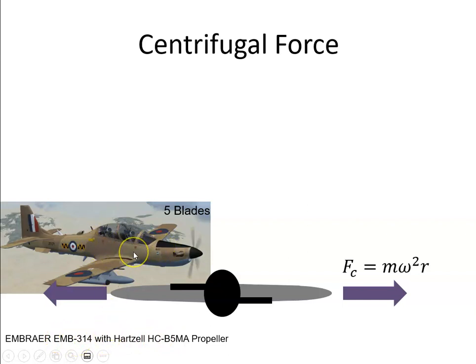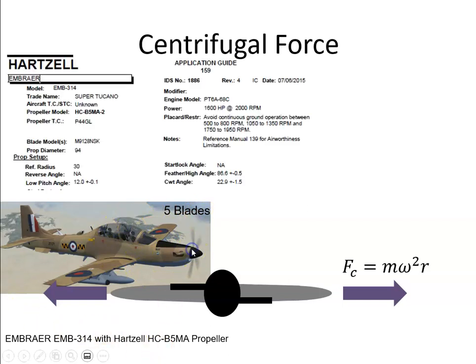That propeller is fitted to the Super Tucano, an aircraft used as a trainer for a number of air forces around the world. The Hartzell data sheet tells us that the blade rotates at a speed of 2000 RPM and has a prop diameter of 94 inches.